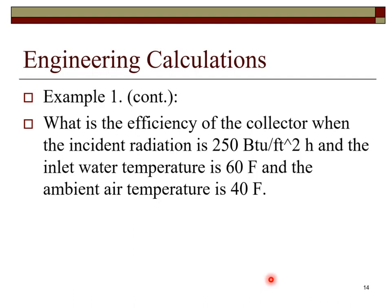Let's calculate the efficiency under conditions described here. The solar radiation is 250 BTUs per foot squared hour. The inlet temperature is 60 degrees Fahrenheit and the ambient temperature is 40.